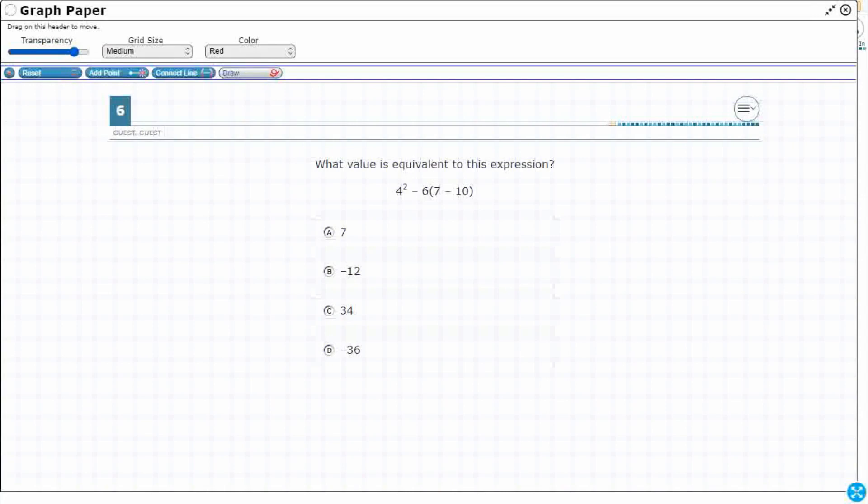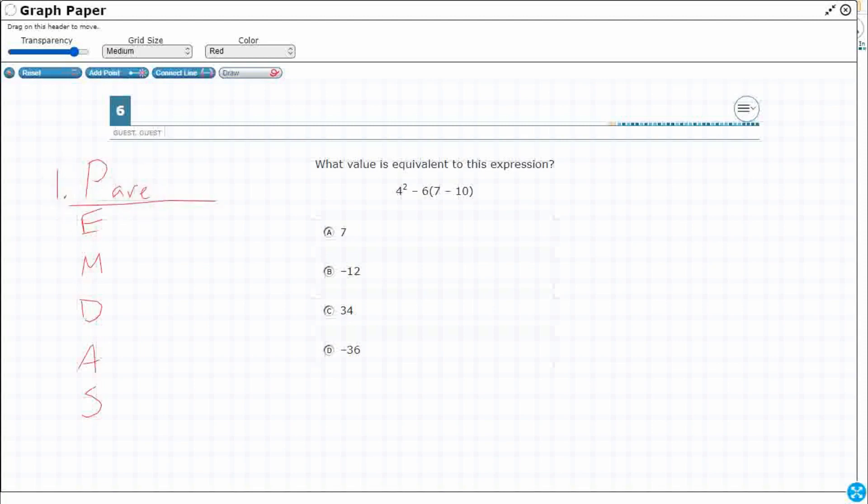And before we get started, let's please excuse my dear aunt Sally. So that's how I remember PEMDAS. The first thing that we always look at is the parentheses. We do have some parentheses in here. Second, we always look at exponent. We actually do have an exponent.